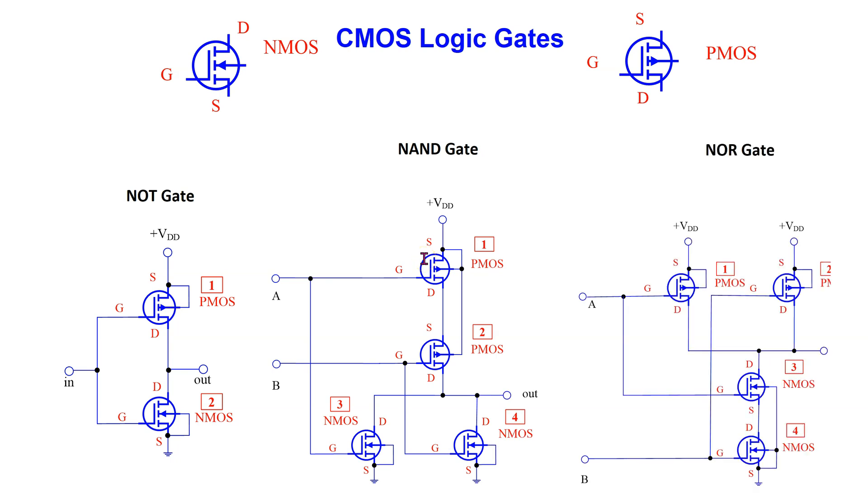A CMOS NAND gate can be constructed by connecting two P-channel MOSFETs in parallel and two N-channel MOSFETs in series. A CMOS NOR gate can be constructed by connecting two P-channel MOSFETs in series and two N-channel MOSFETs in parallel.